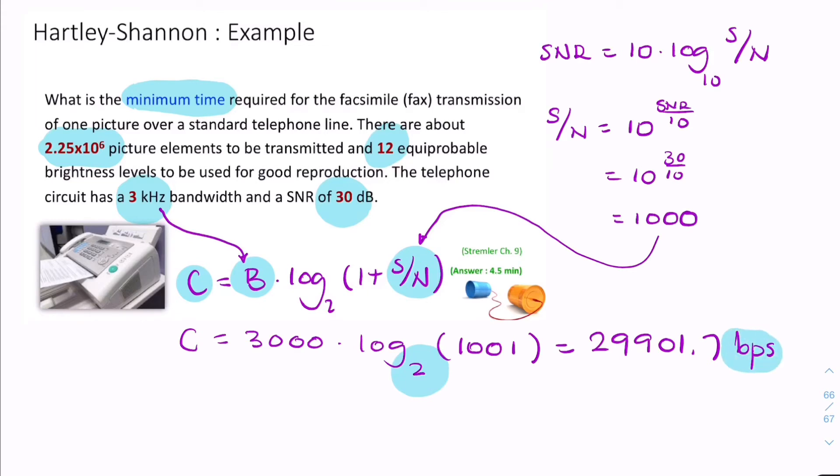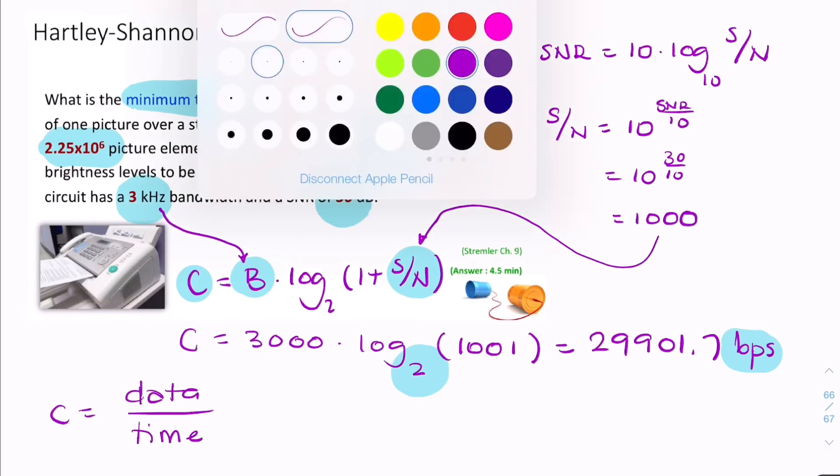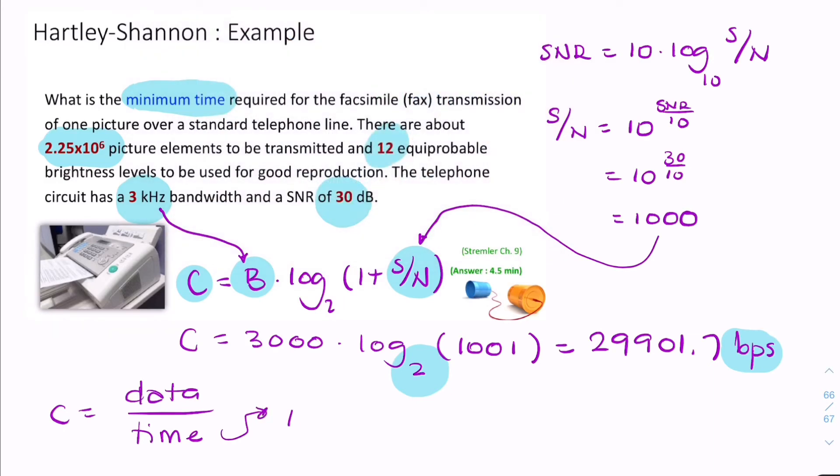So, channel capacity is how fast we can send data through the channel. So, the unit is bits per second. It's like saying, how much data in bits can we send per unit time in seconds? And the question is asking for time. So, we can rewrite time as the amount of data we have divided by C.